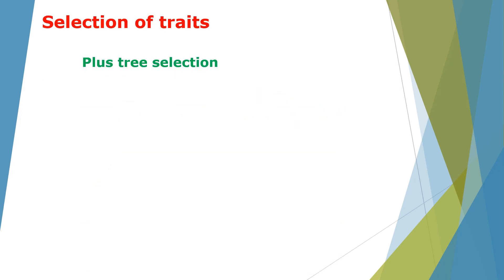Tree selection is a complicated process — it takes time, effort, and a lot of field work to accomplish what you want to achieve. However, for this presentation I have attempted to simplify this for you. The methods commonly used for tree selection include plus tree selection, which we'll be talking about, as well as provenance trials or provenance tests.